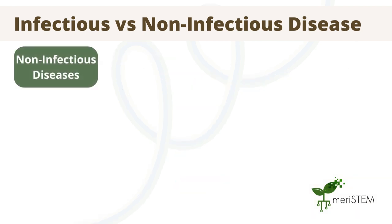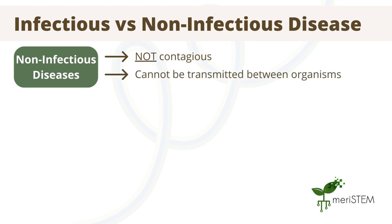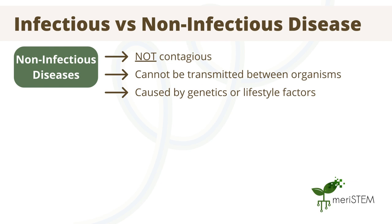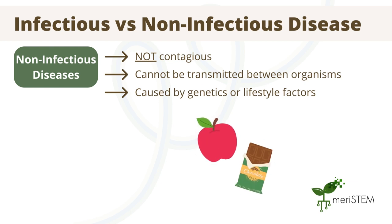The second main type of disease is a non-infectious disease. These diseases are not contagious, meaning that they can't be spread between organisms. Instead of being caused by pathogens, these diseases are generally caused by either genetics or lifestyle factors. Lifestyle factors that can cause disease can include diet and nutrition as well as exposure to negative environmental factors.